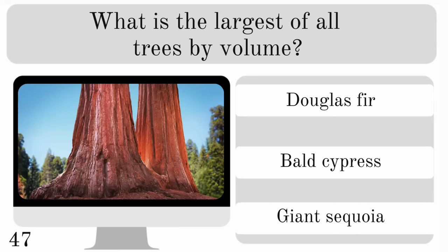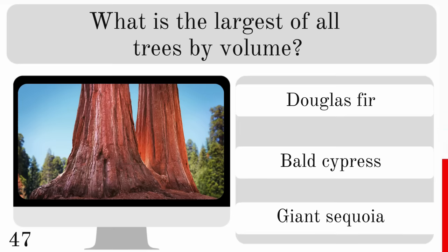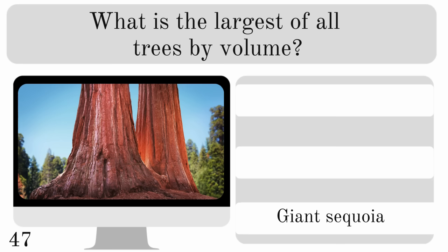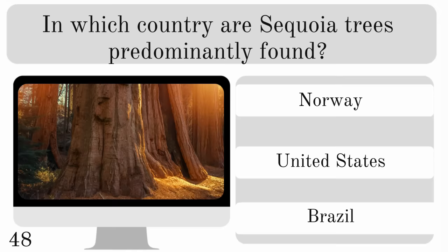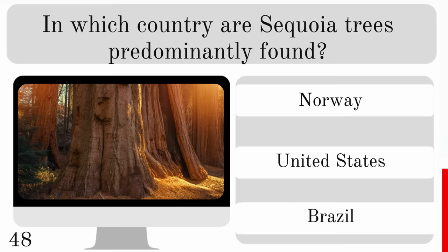What is the largest of all trees by volume — the Douglas fir, bald cypress or giant sequoia? The answer is the giant sequoia. So in which country are sequoia trees predominantly found — Norway, the United States or Brazil? They are found in the United States.